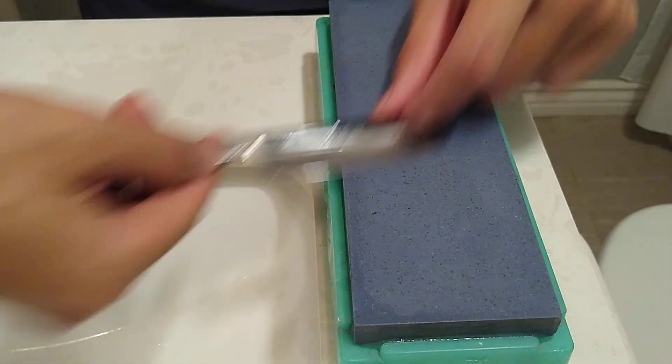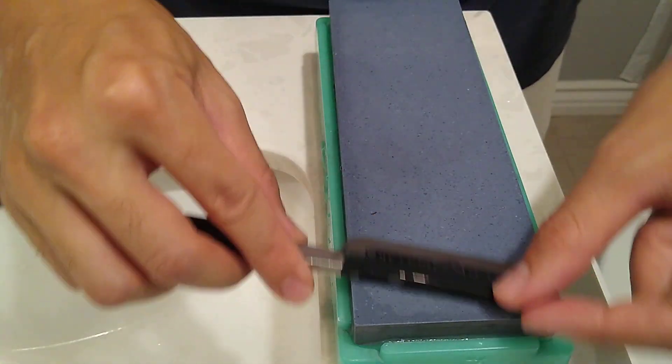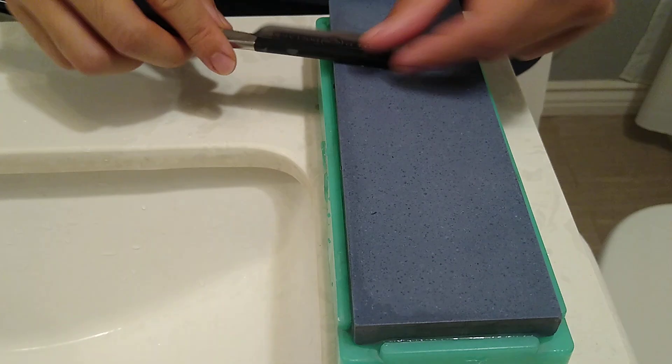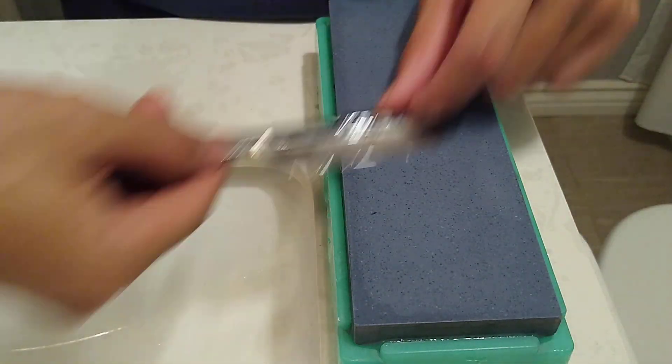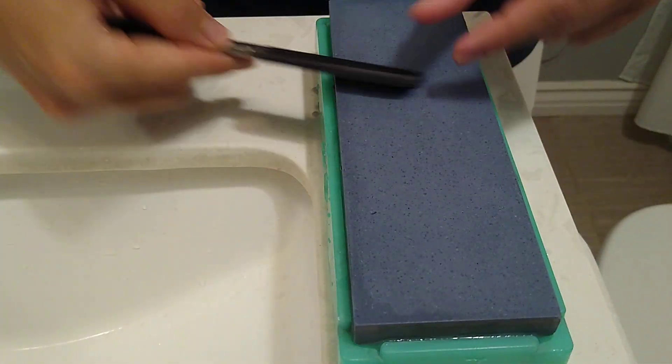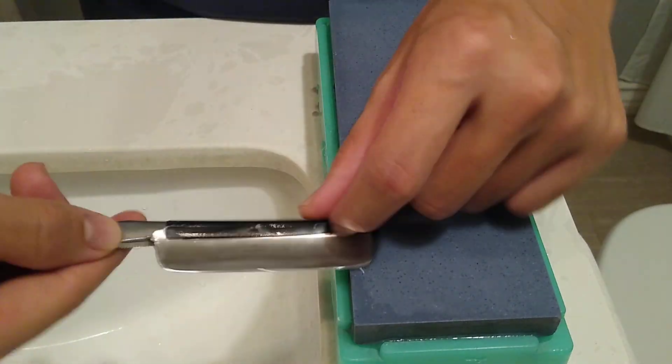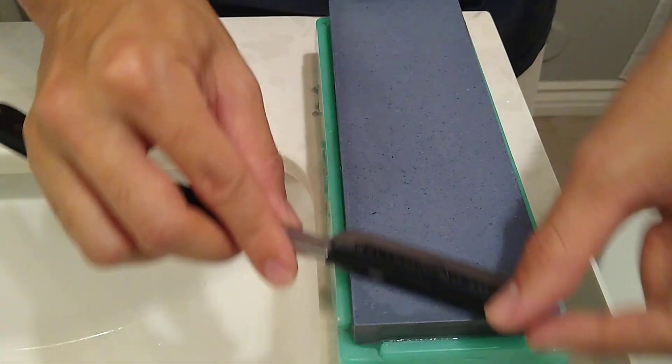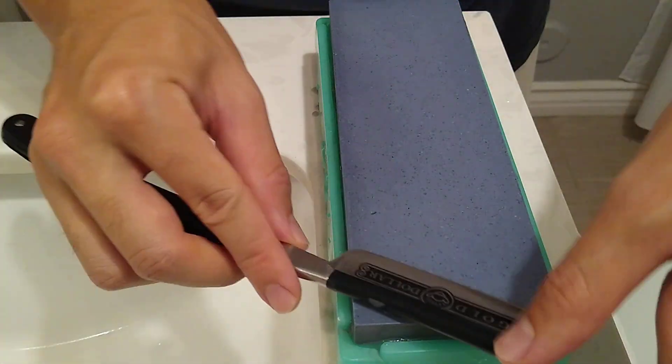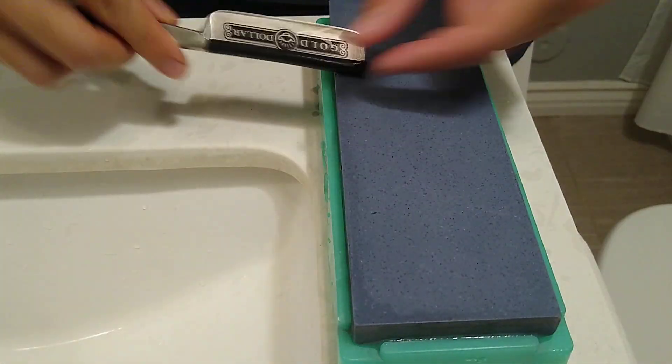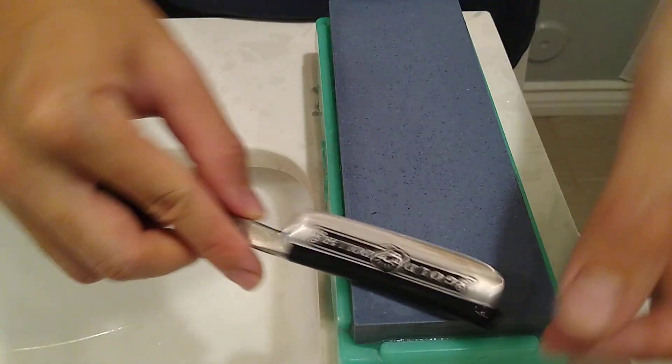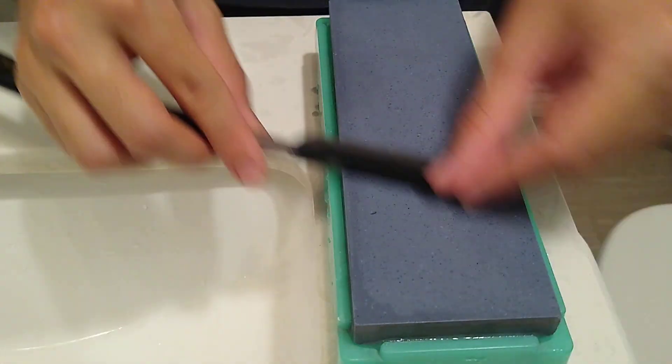Continuing on the rolling X strokes. I feel like this should at this point improve the edge and should be at a point where it cuts hair. But when I was working with yesterday, even after like 30 minutes an hour, it wasn't cutting hair. So something was off. But I'm hoping that as I continue to work at it, I will notice some improvements.